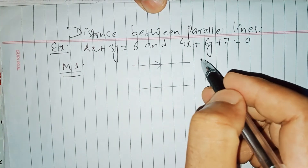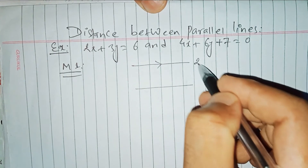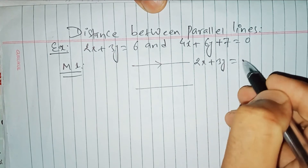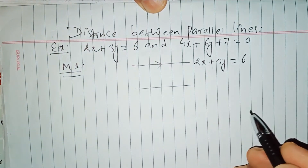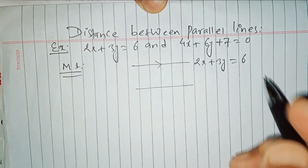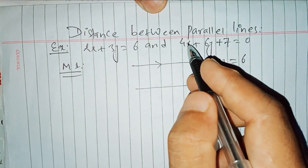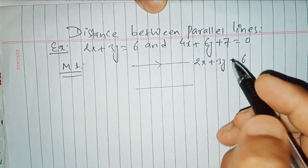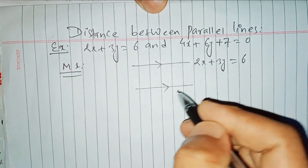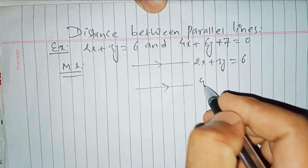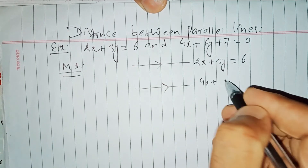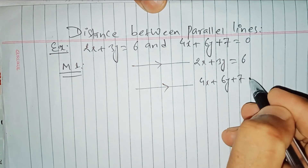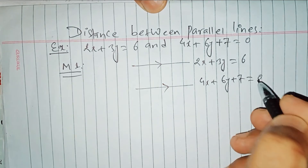We have two parallel lines. The first line is 2x plus 3y equals to 6. The second line is 4x plus 6y plus 7 equals to 0.